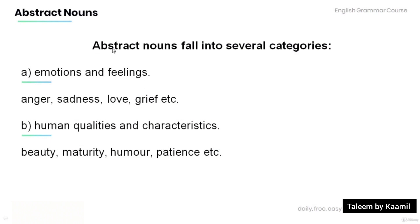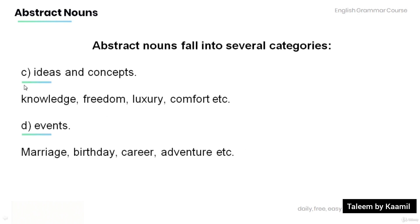Abstract nouns fall into several categories. A: Emotions and feelings, such as anger, sadness, love, grief, etc. B: Human qualities and characteristics, such as beauty, maturity, humor, patience, etc. C: Ideas and concepts, such as knowledge, freedom, luxury, comfort, etc. D: Events, for example, marriage, birthday, career, adventure, etc.